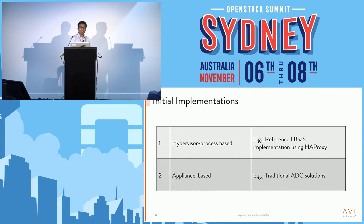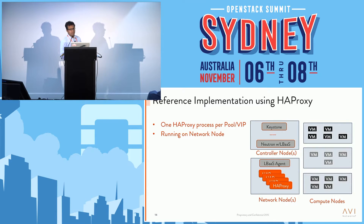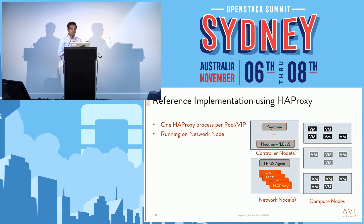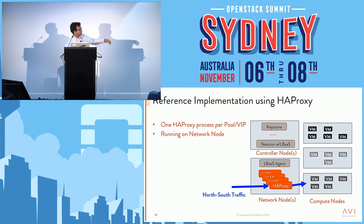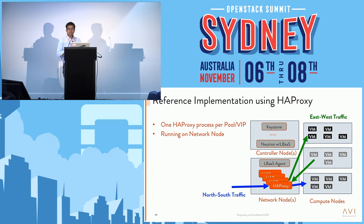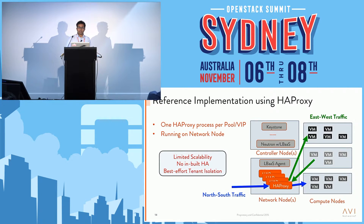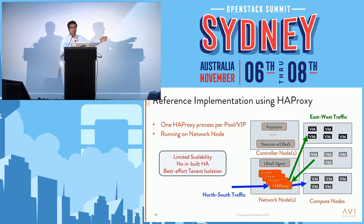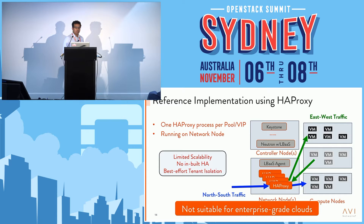Moving on to how those APIs are implemented in OpenStack — I'll go through a couple of common implementations. The reference implementation uses HAProxy, with one HAProxy per load balancer instance running on the network node. The problem is it's not very scalable. North-south traffic flows through the network node, and east-west traffic has to travel all the way there and back. It has no built-in high availability, and tenant isolation is best-effort since all HAProxy instances share the same node and resources — not an enterprise-grade solution.